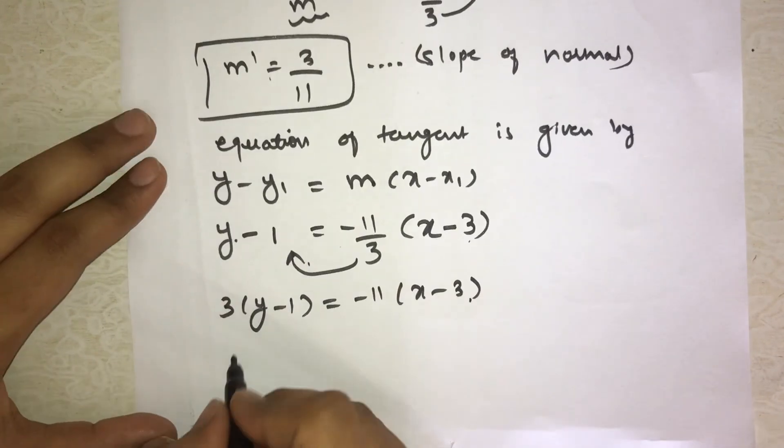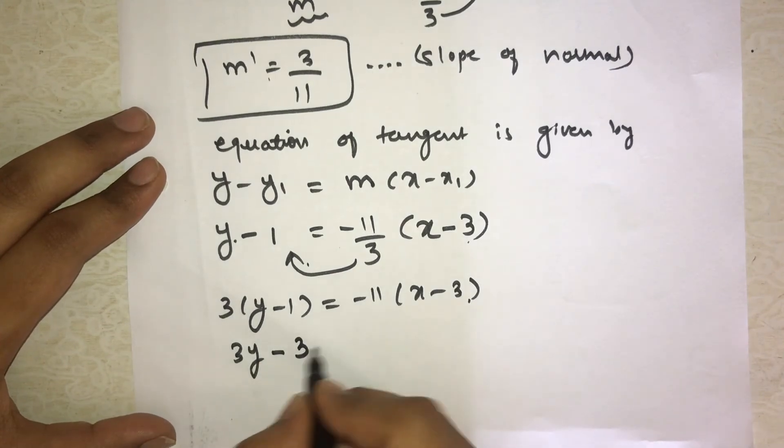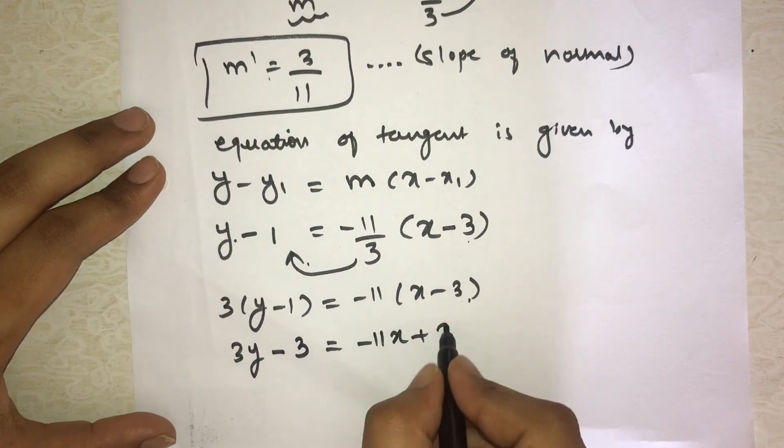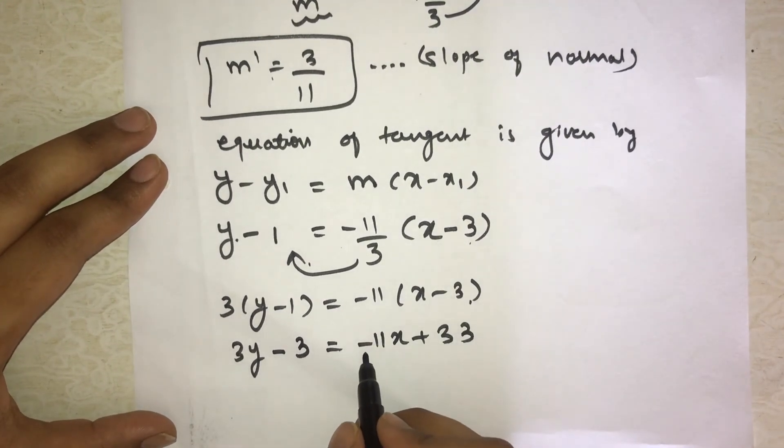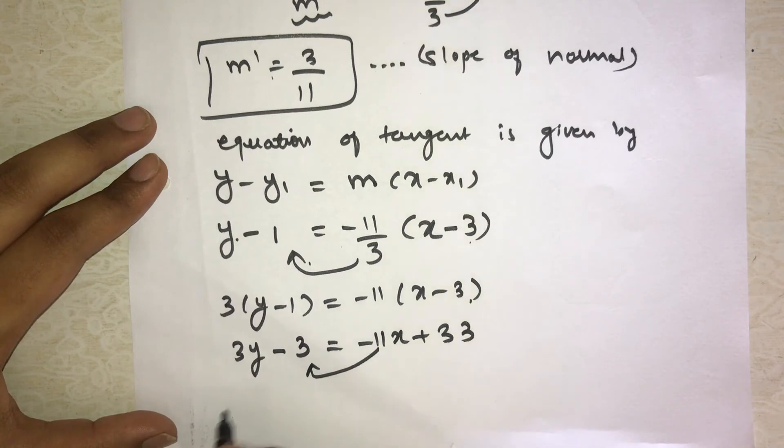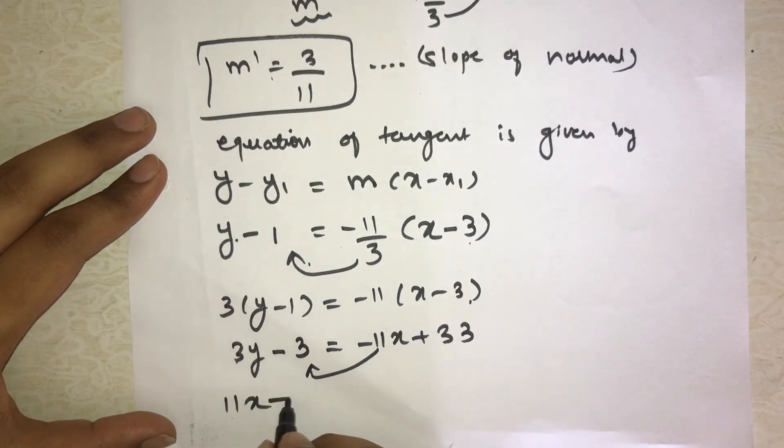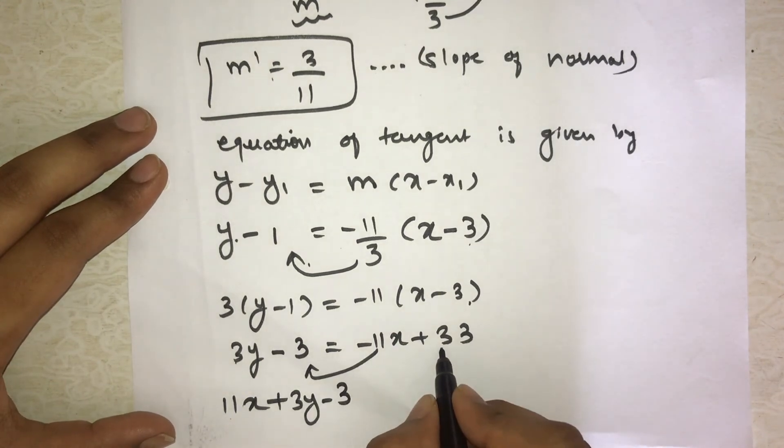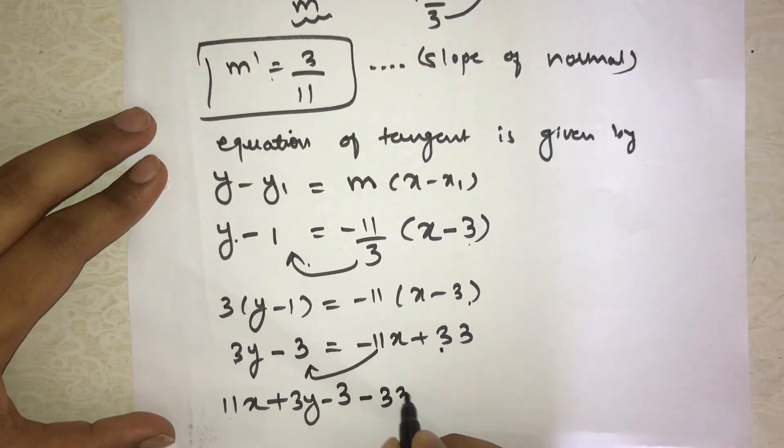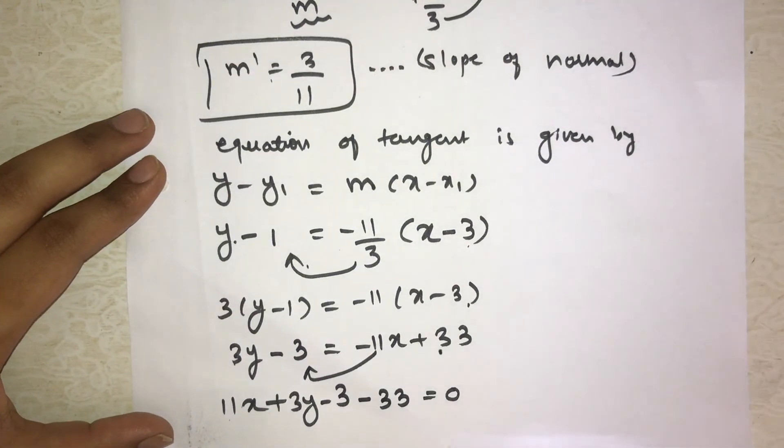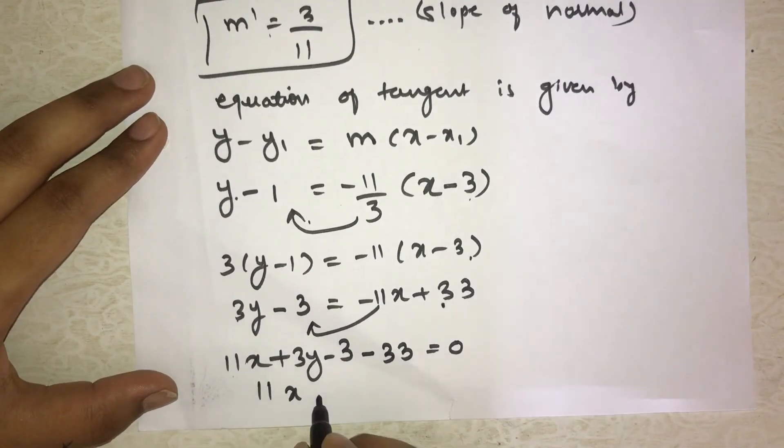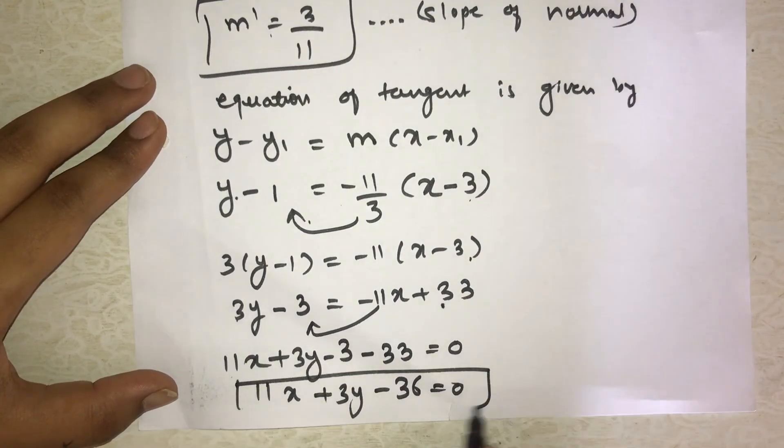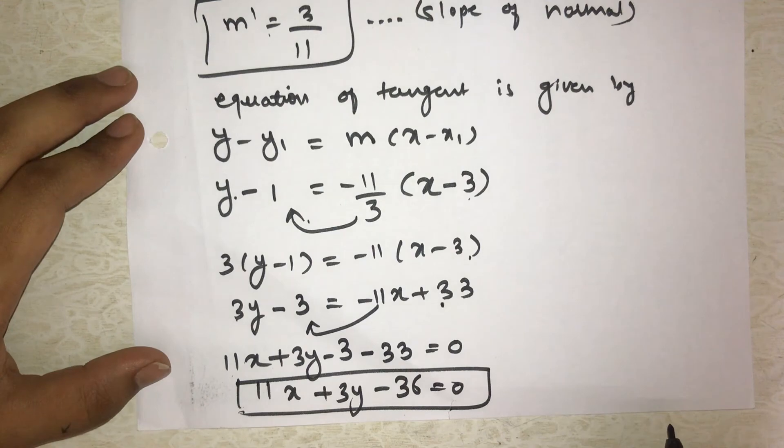Now solve. This 3 comes to this side and multiplies: 3y - 3 = -11(x - 3). Now solve this. 3 times y is 3y minus 3 times 1 is 3, equals -11 times x, then minus minus becomes plus 33. Now -11x we take to this side, it becomes +11x. Then +3y as it is, -3 as it is. Then 33 comes to this side, plus becomes minus. Equal to 0. Simplifying: 11x + 3y - 36 = 0. So this is equation of tangent.